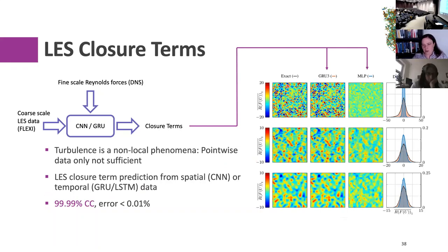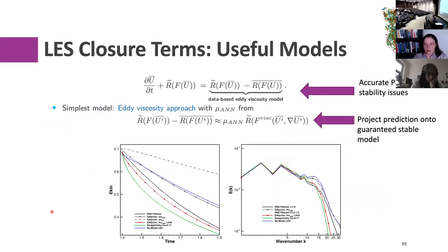Here's what this looks like: the unseen Reynolds stresses on test data in the left column, what our temporal network predicted in the middle, and what our spatial network predicted — that wasn't too great. But our sequential networks were able to predict the true Reynolds stresses with 99.9% accuracy and very low error. So we thought: we have a highly accurate model, let's plug it back into our LES and use it. But when we did that, our simulation would blow up all the time.